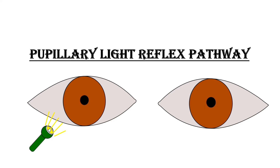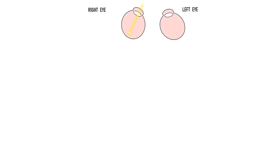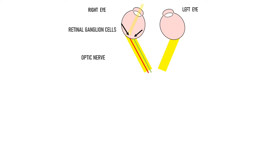Light enters the eye through the pupil and falls on the retina. From the retinal ganglion cells, the information is carried by the optic nerve, which is the second cranial nerve. The optic nerve carries impulses from the nasal half of the retina and the temporal half of the retina — fibers arranged laterally represent the temporal fibers and those medially represent the nasal fibers. Then the optic nerve reaches the optic chiasma, which is located just above the pituitary gland, where decussation of these nerve fibers takes place.